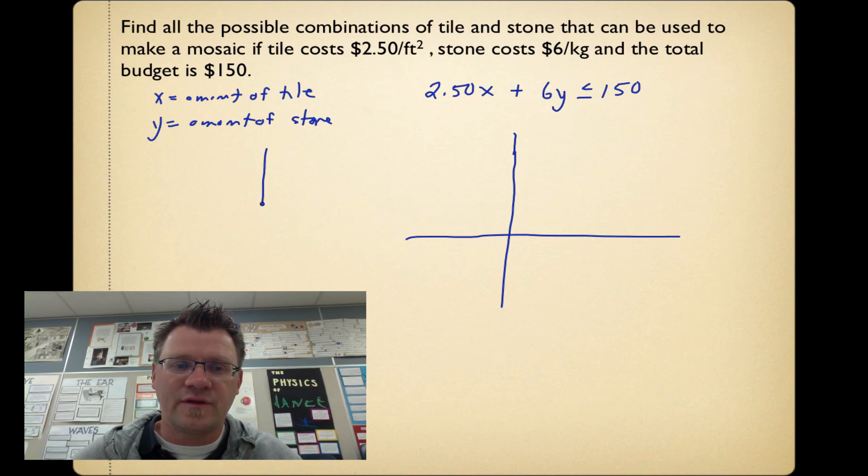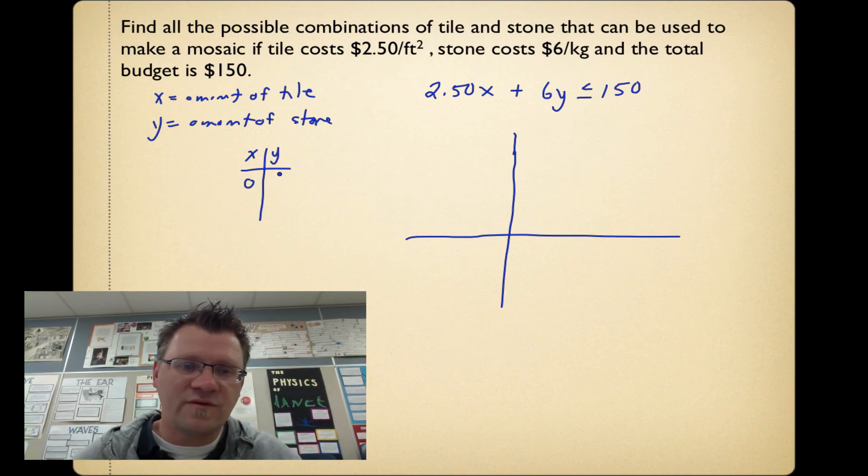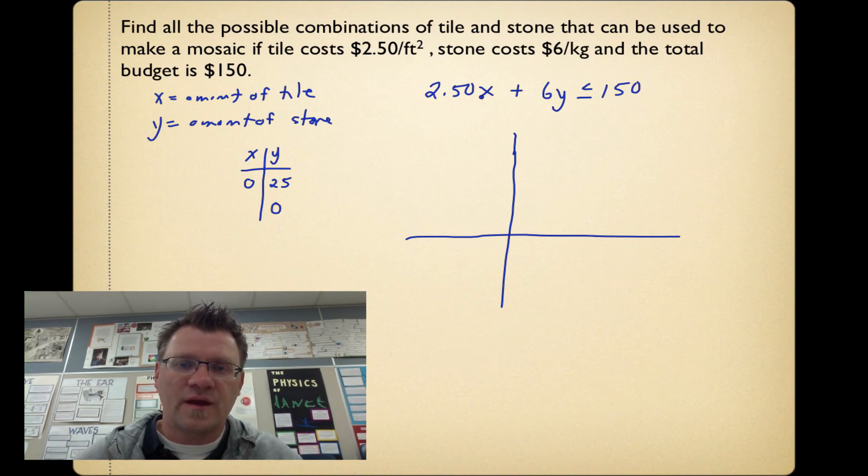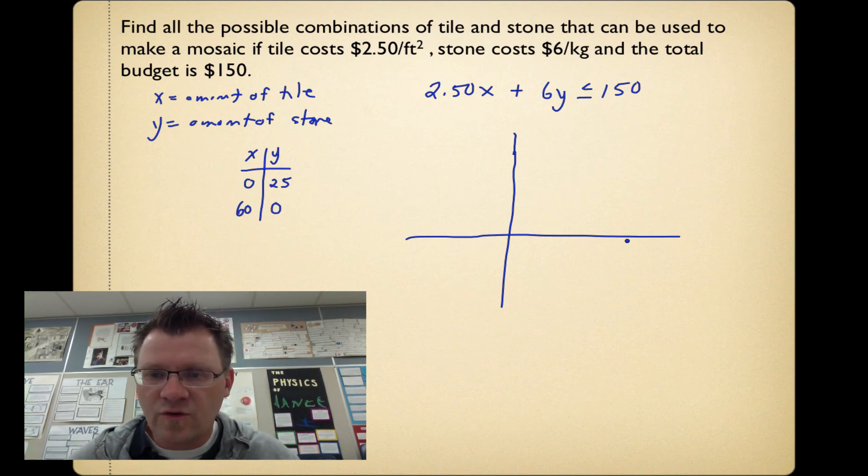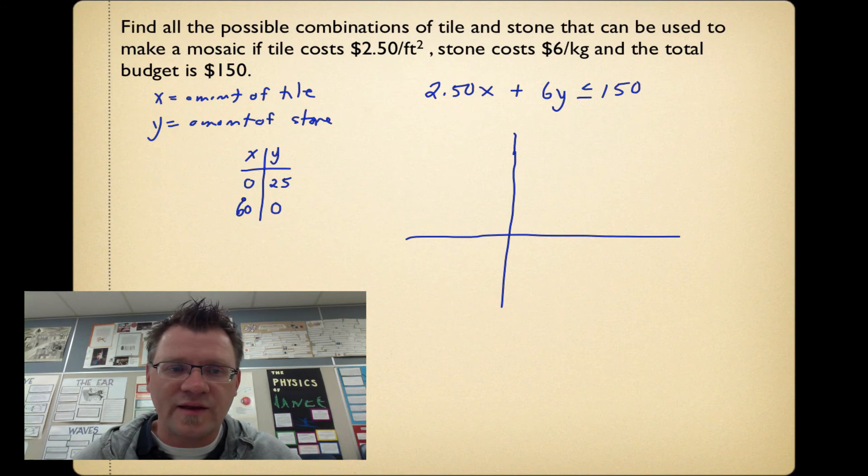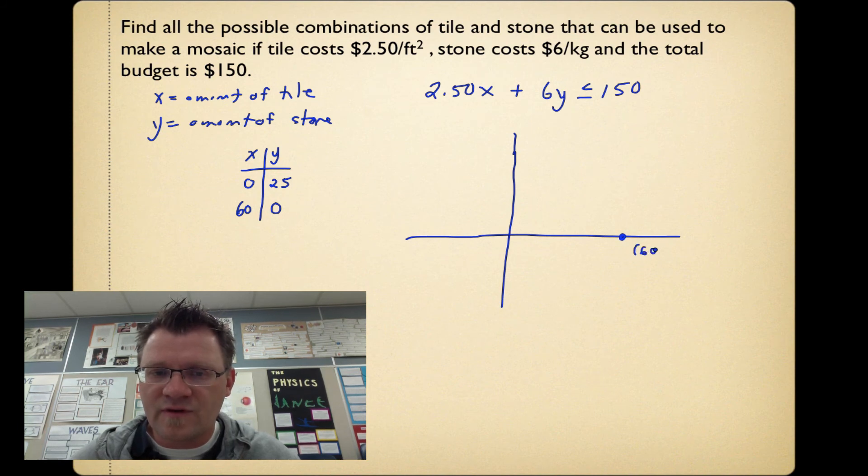To graph this thing, I just set up a little table, x and y. So when I let x equal 0, I get 6y is 150, so that is equal to 25. And when y equals 0, I get 2.50x equals 150, and that equals 60. So I'm not even really going to put a scale in here, but I know that x is 60 when y is equal to 0, so we're looking at something right about here. That would be 60, 0. And something like this would be about 0, 25.